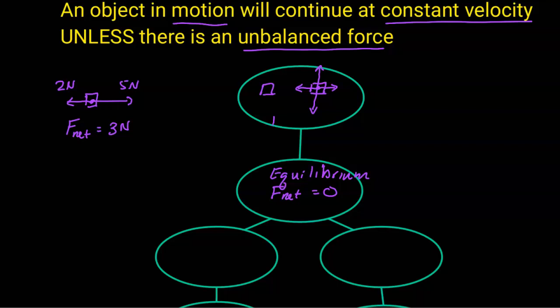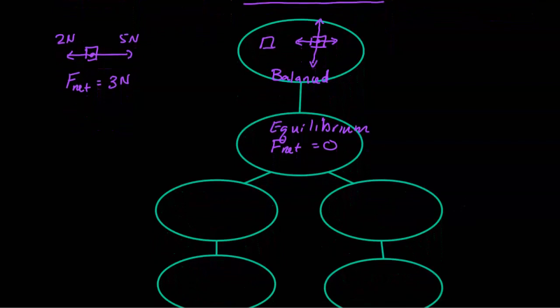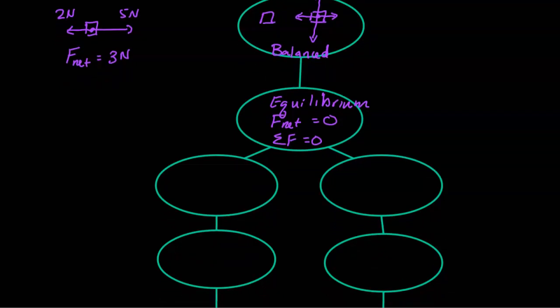When the forces are balanced or if there are no forces, then the net force is zero. And when the net force is zero, we say that the object is in equilibrium. We can also use the Greek letter sigma F equal to zero to represent that the net force equals zero.